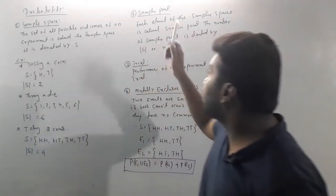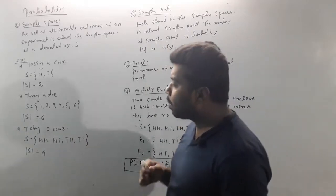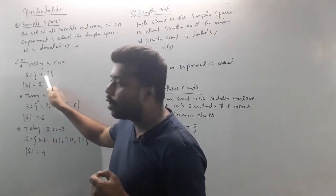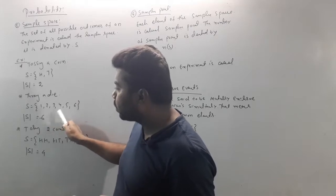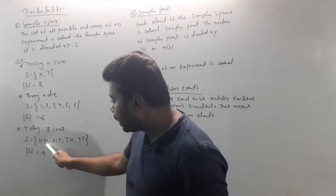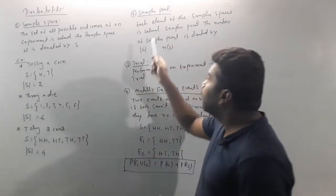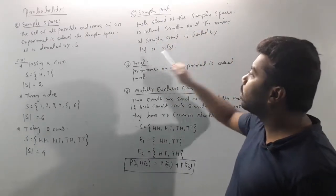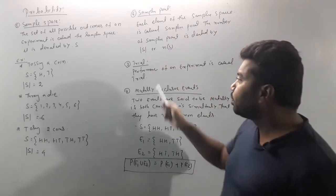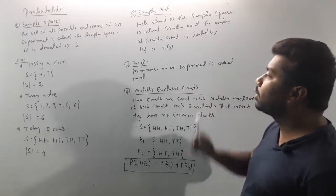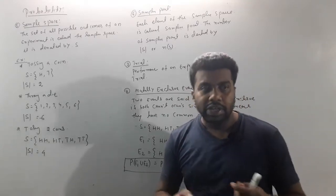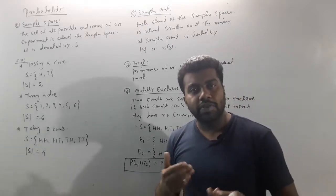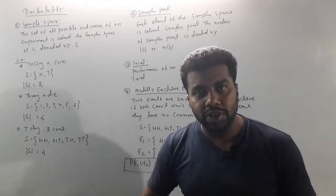The next term is sample point. Each point of a sample space is called a sample point — each element of a sample space is called a sample point, denoted by |S| or n(S). The next term is trial — the performance of an experiment is called a trial.